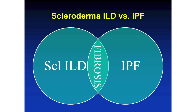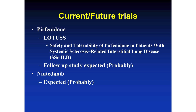Scleroderma-associated interstitial lung disease and idiopathic pulmonary fibrosis are very distinct disorders, but they share a common pathway or mechanism — fibrosis or scarring — which doesn't respond to currently available therapies. These drugs are currently being studied in scleroderma. We have the LOTUSS study, which examined the safety and tolerability of pirfenidone in patients with systemic sclerosis-associated ILD. A follow-up study is anticipated, and we also anticipate a similar follow-up study for nintedanib.